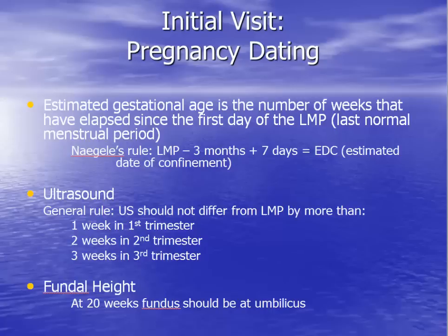Ultrasound is the most precise way to estimate the due date. Ultrasound obtained in the first trimester is accurate to within 3 to 4 days. The later in pregnancy an ultrasound is obtained, the less accurate is the due date. Measurement of the uterine height from the pubic symphysis to the fundus in centimeters is a rough estimate of gestational age as well. The number of weeks pregnant roughly equals the fundal height in centimeters. For example, if you measure the fundal height at 24 centimeters, the patient is approximately 24 weeks pregnant.